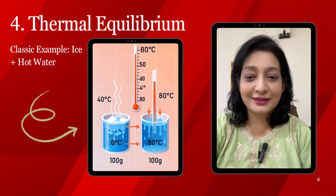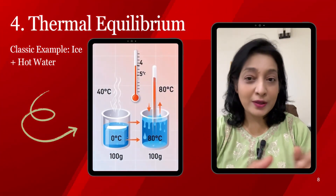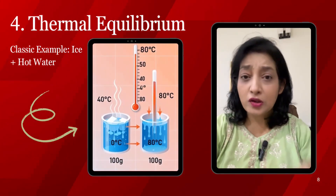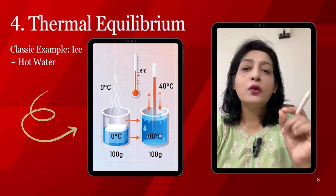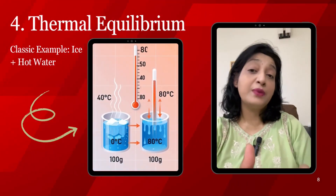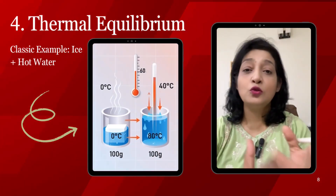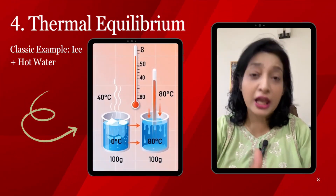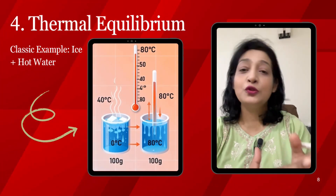Thermal equilibrium: two systems are in thermal equilibrium if no net heat flows between them — their temperatures are equal. If A is in equilibrium with B, and B is in equilibrium with C, then A and C are also in equilibrium with each other.